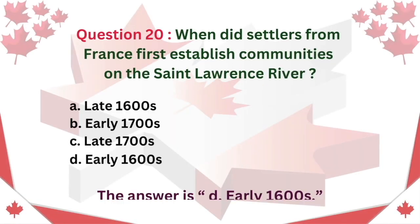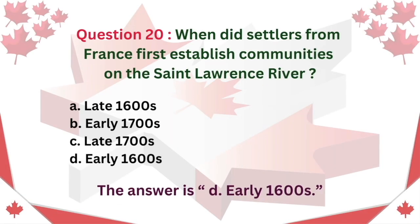Question 20: When did settlers from France first establish communities on the St. Lawrence River? A. Late 1600s. B. Early 1700s. C. Late 1700s. D. Early 1600s. The answer is D. Early 1600s.